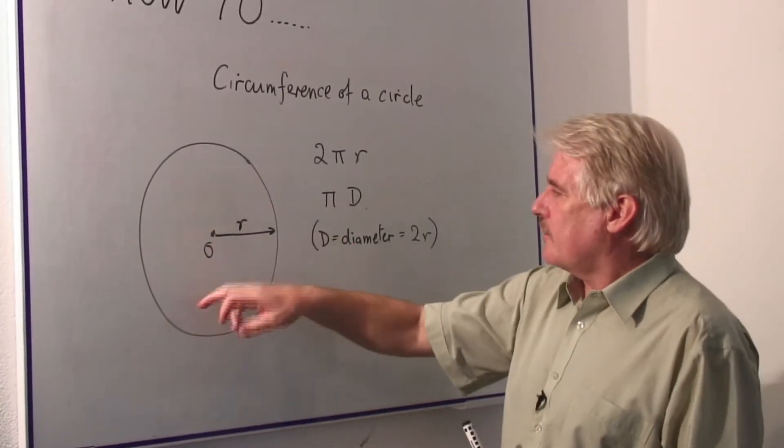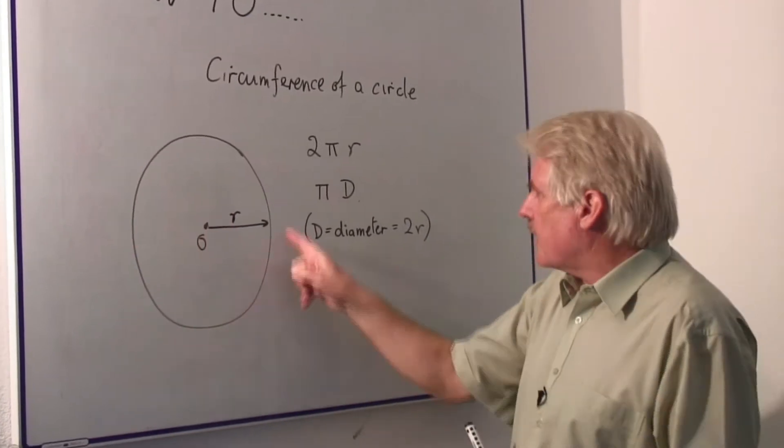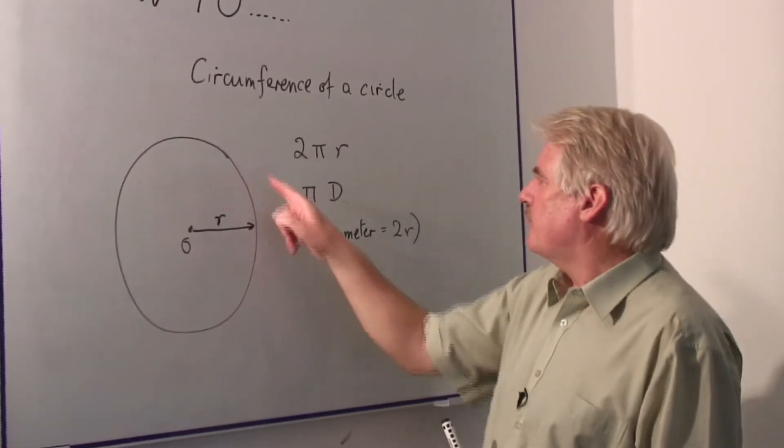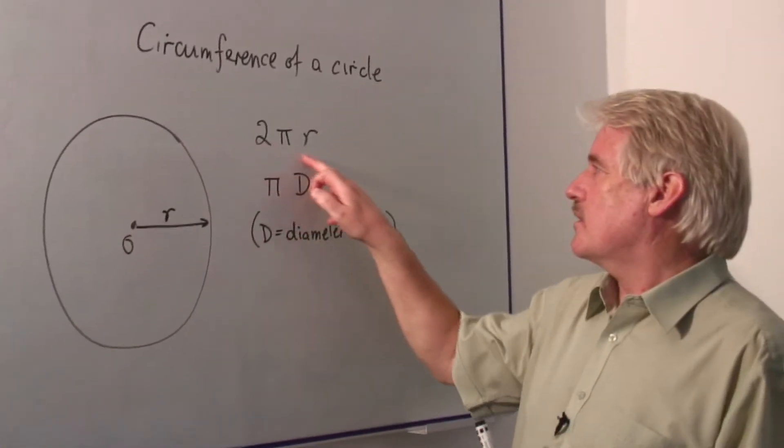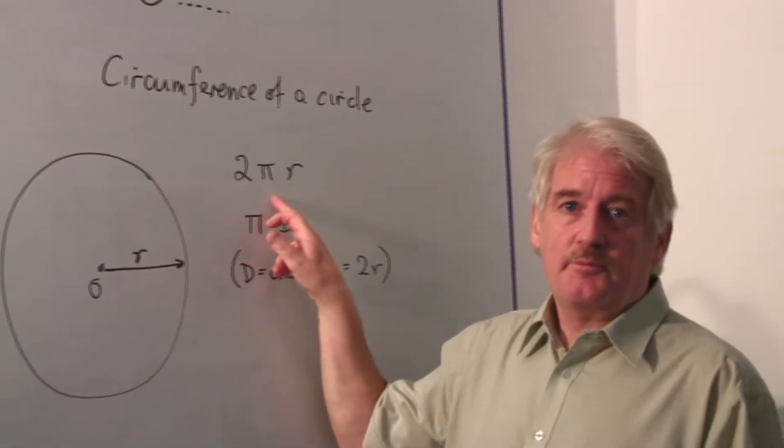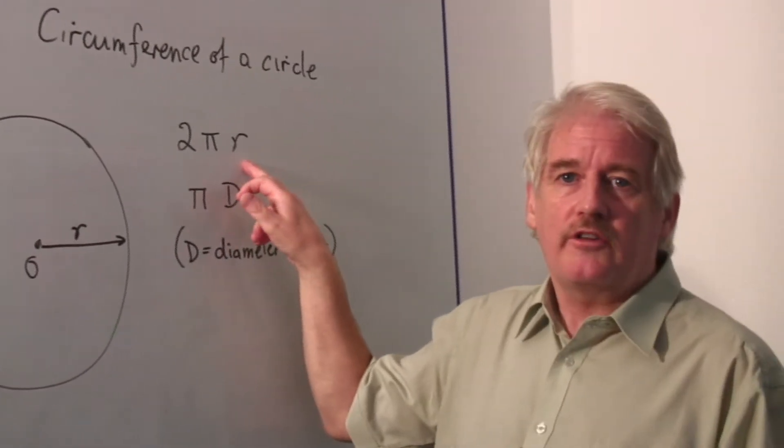Now the circumference of a circle is the distance around the outside, that's what we mean by the circumference. There is a simple formula for that. The circumference is equal to two times pi times R, R is the radius.